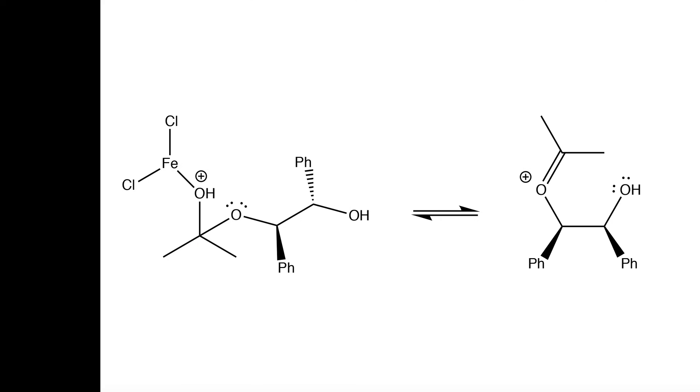Next the lone pairs on this oxygen will form a double bond here and we expel this as our leaving group. This will result in this intermediate right here and notice that this portion of the molecule has rotated along this single bond right here.